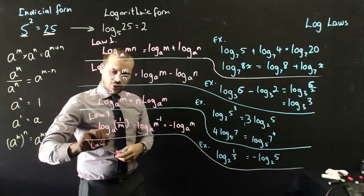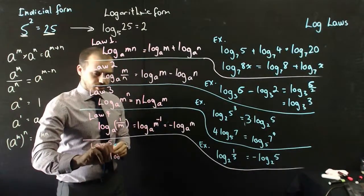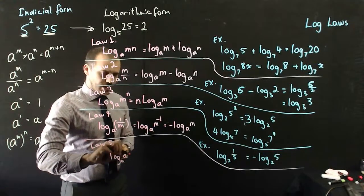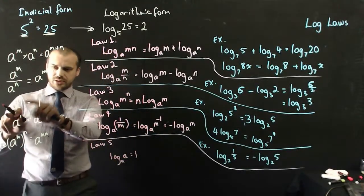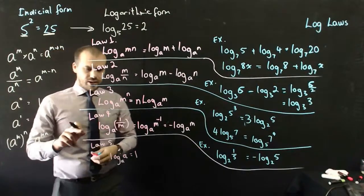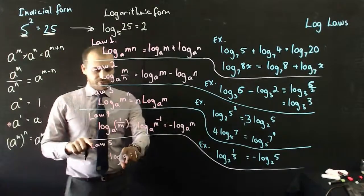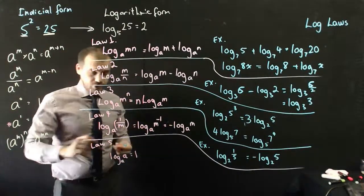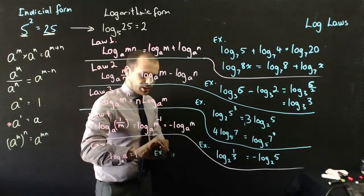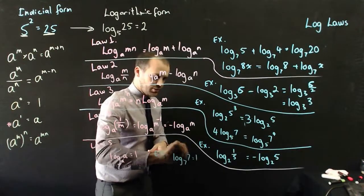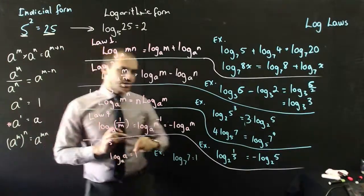Law 5 is very straightforward: log base a of a equals 1. This comes from the index law a to the 1 equals a. It's pretty straightforward — you don't really even need an example. But if it says log base 7 of 7, the answer is going to be 1.